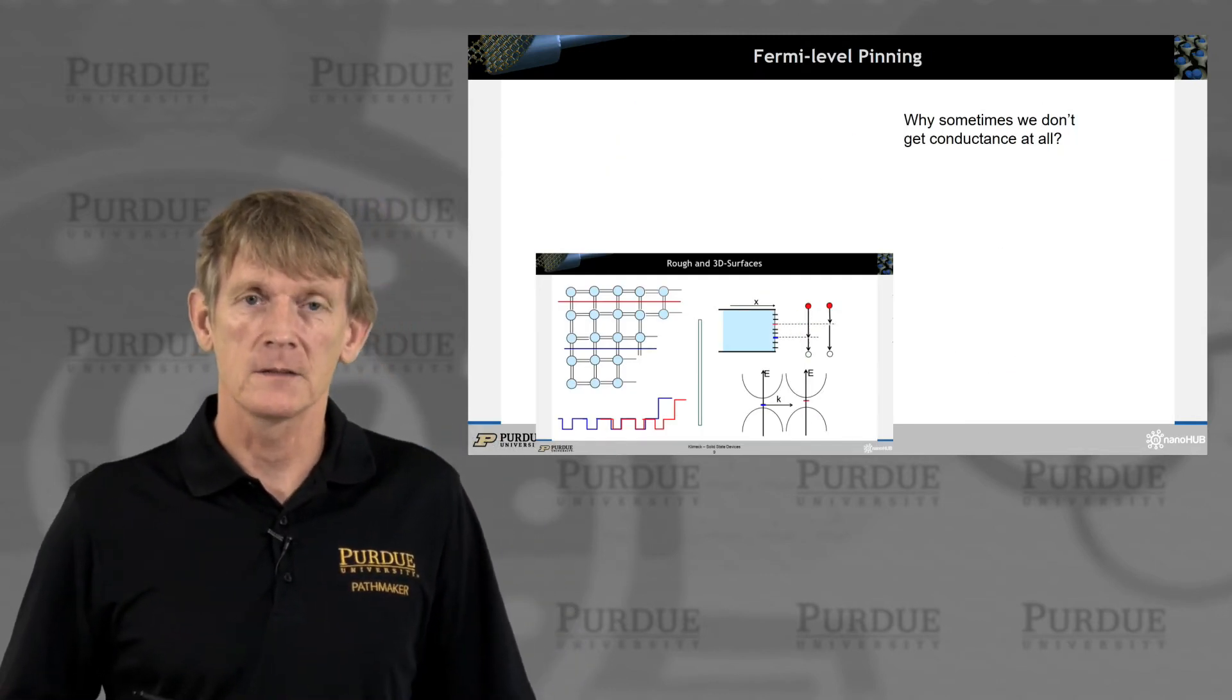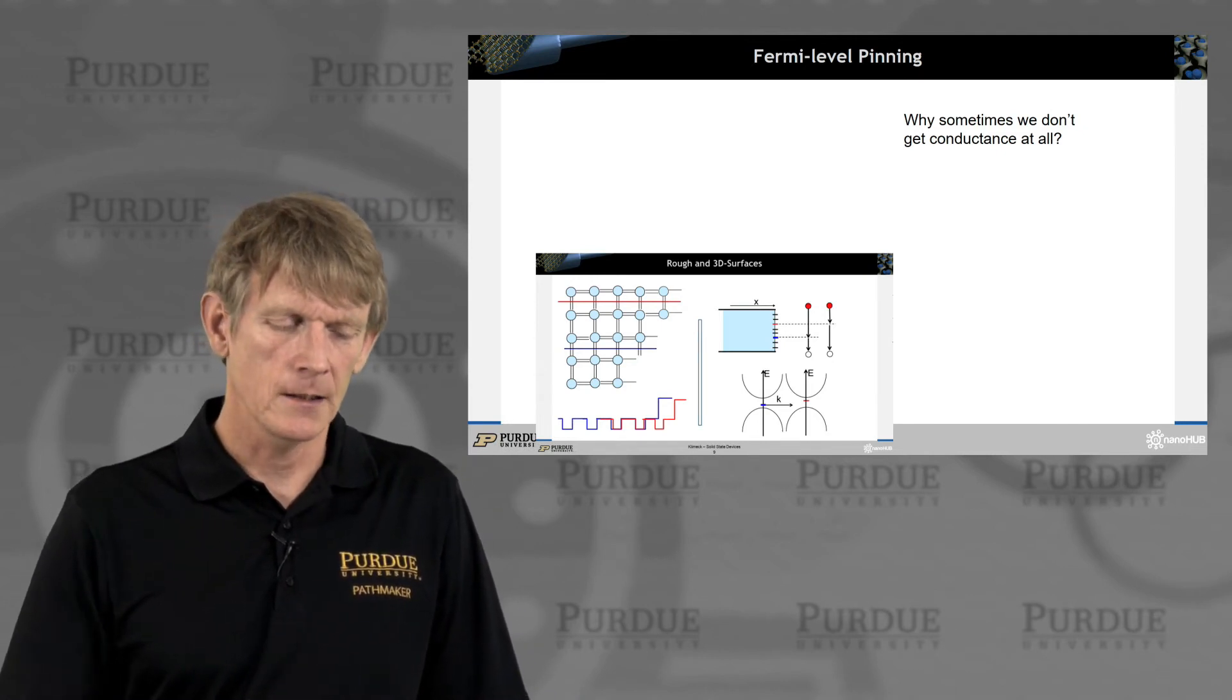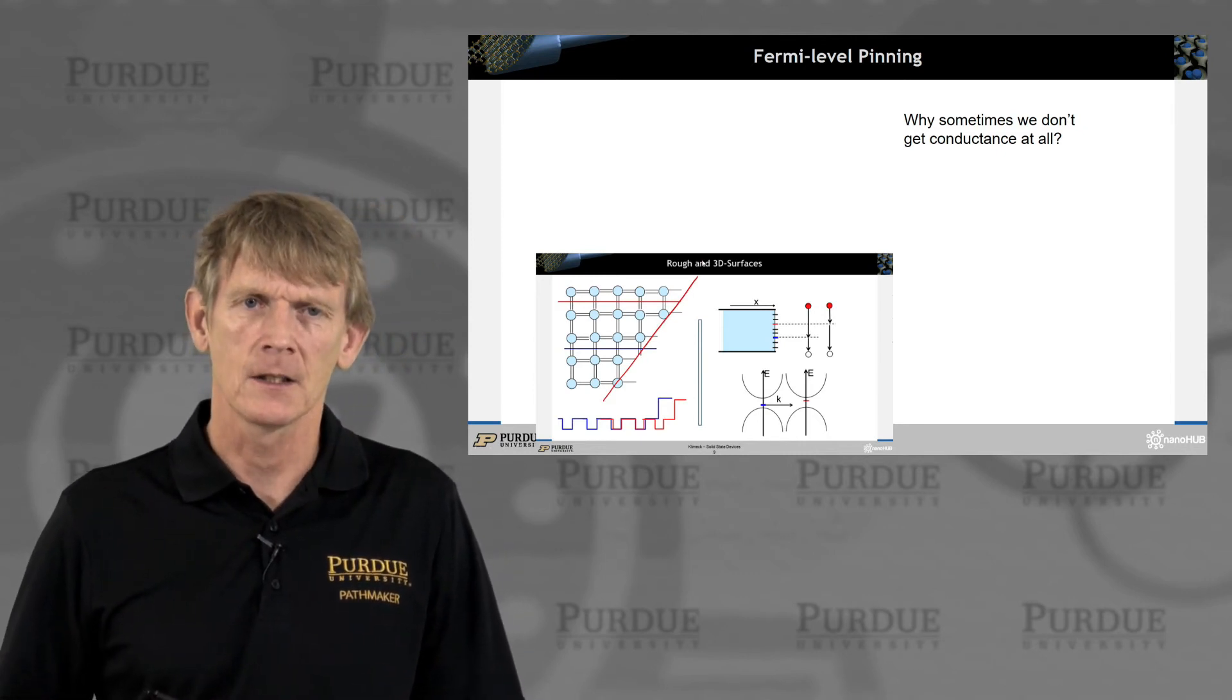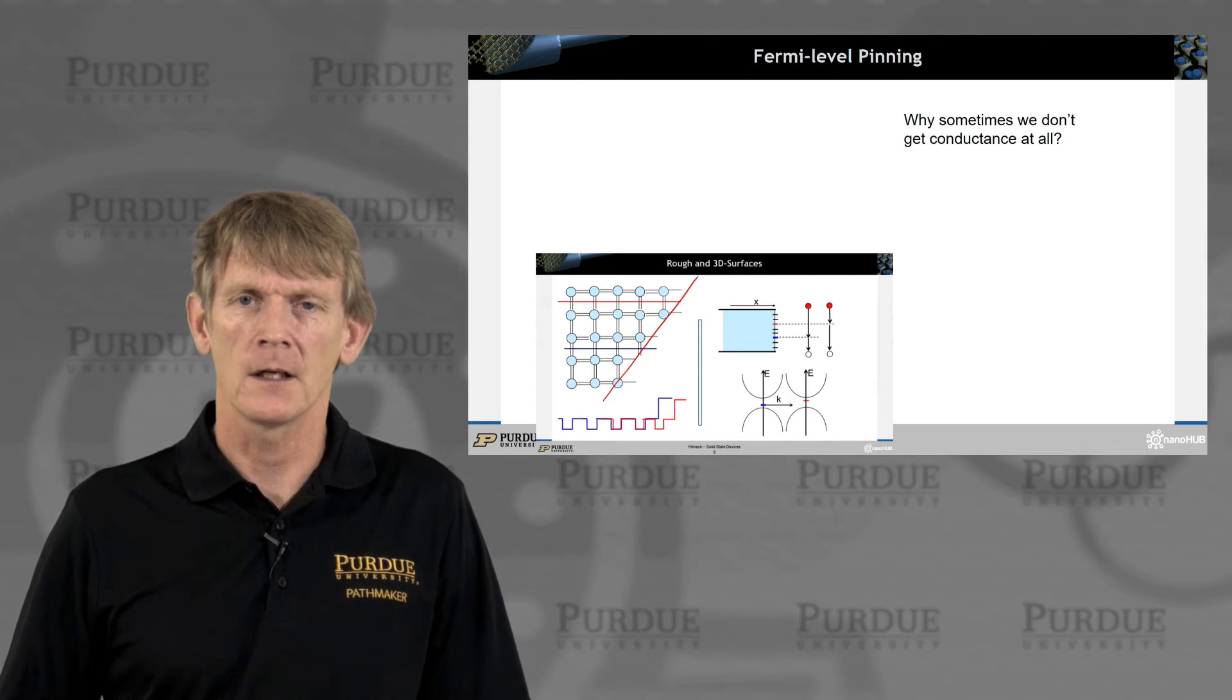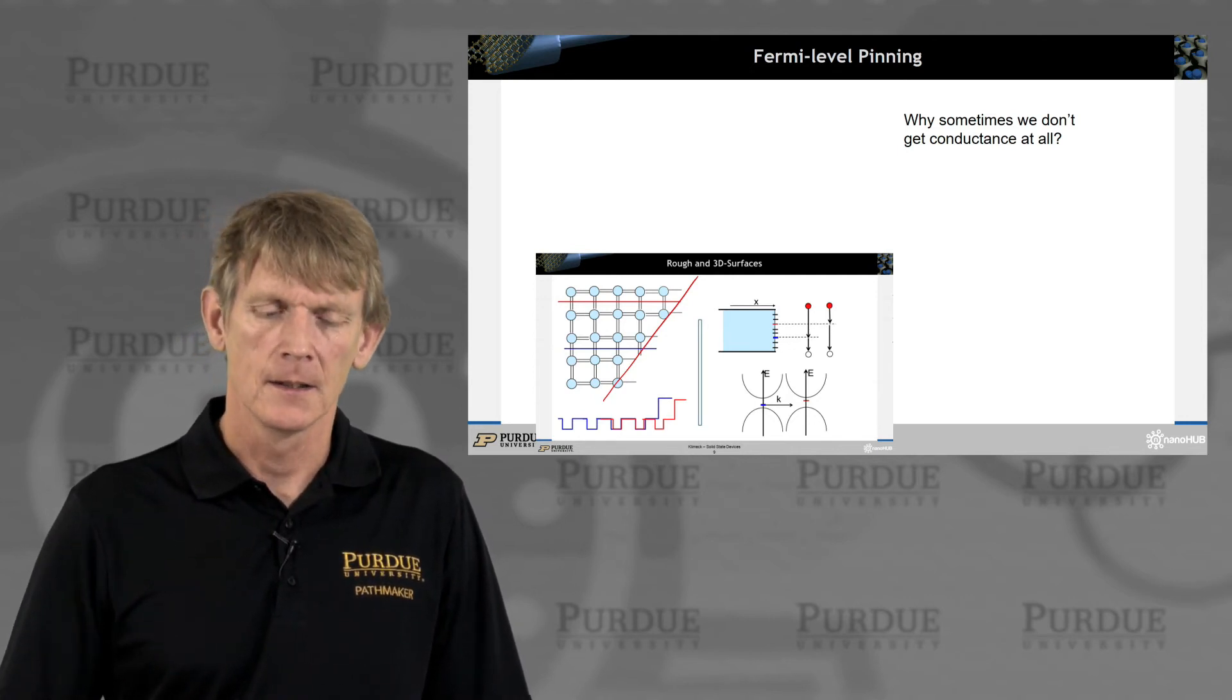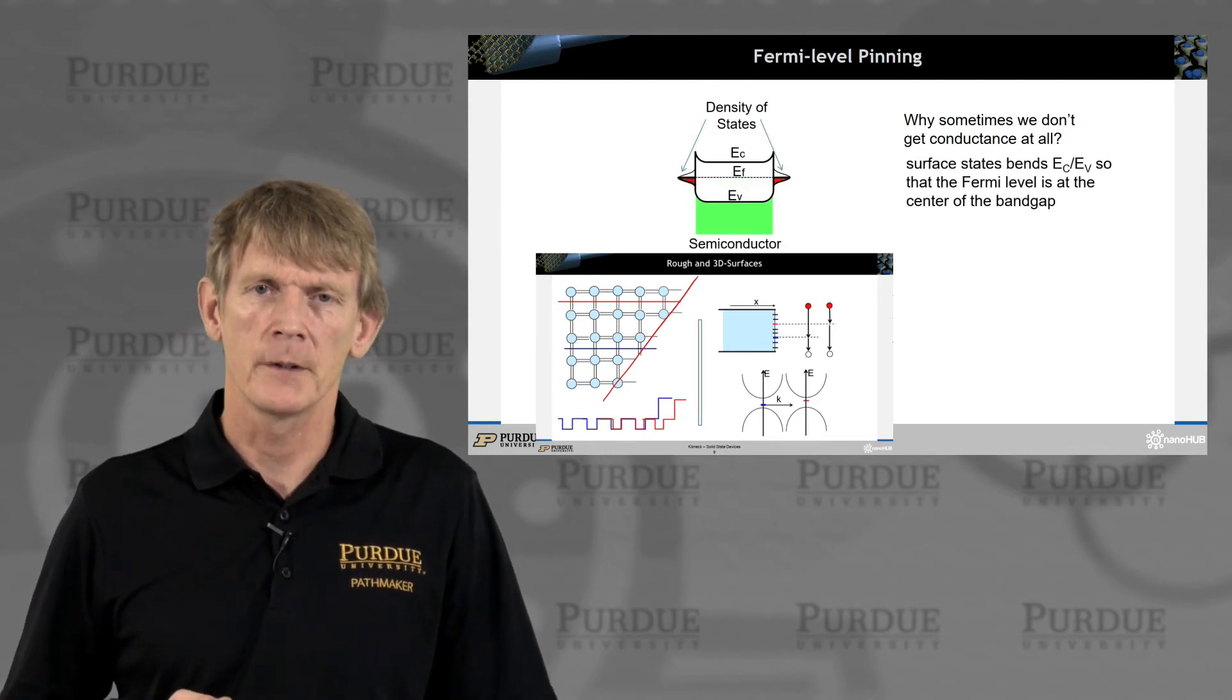All right. Finally, the last topic, but it's actually a very, very important one. Remember the sketch that we had here on interfaces and dangling bonds in semiconductors? Well, we now have a metal to semiconductor interface where even the crystal structures are extremely different. So you will have a ton of dangling bonds you need to do something with. And there's something people talk about, Fermi-level pinning.